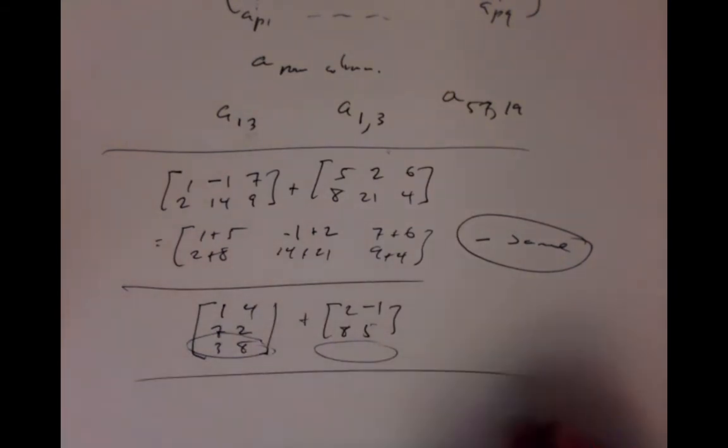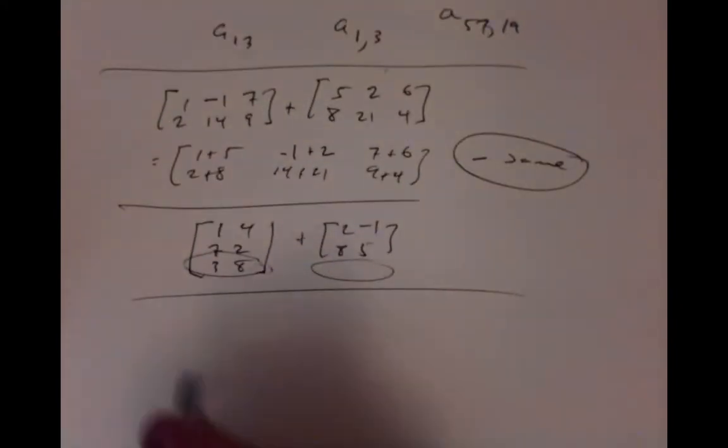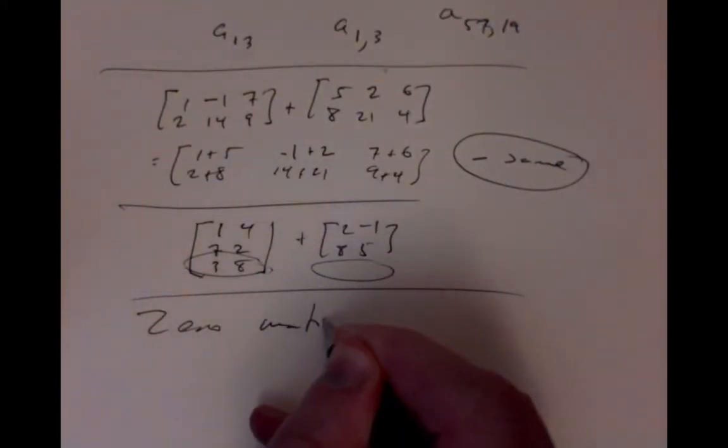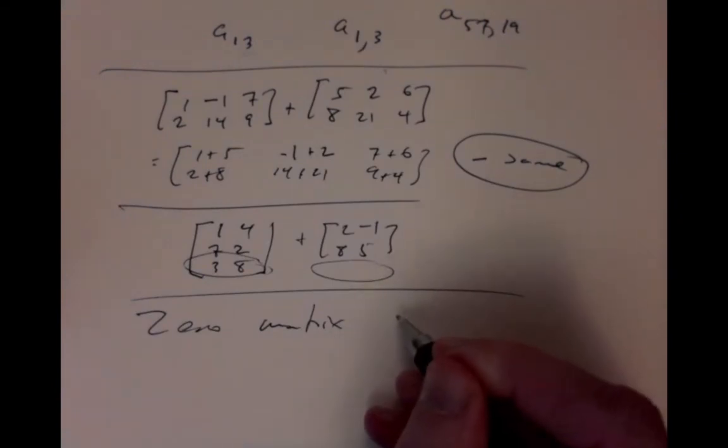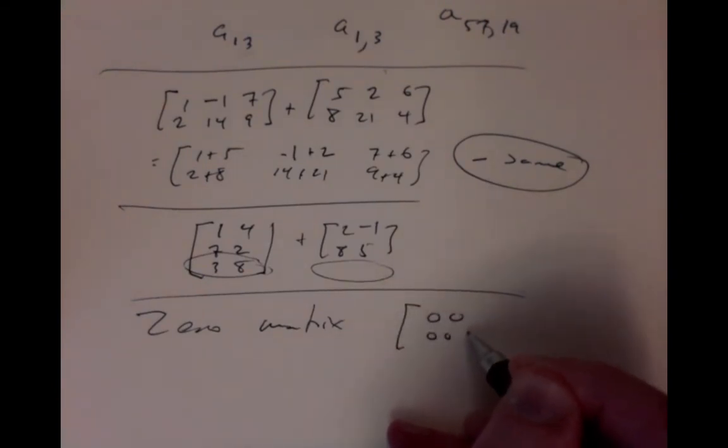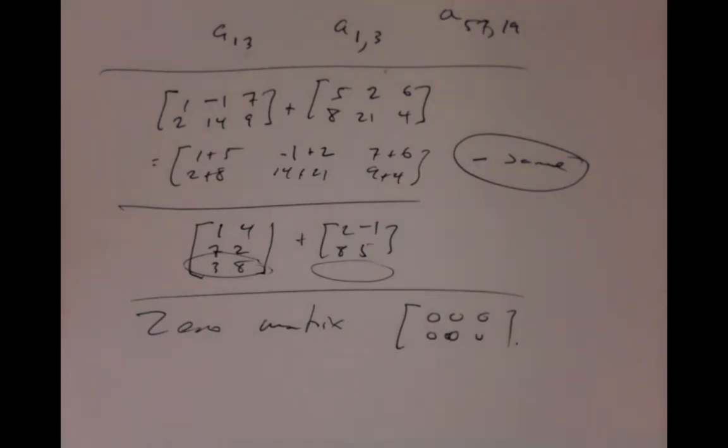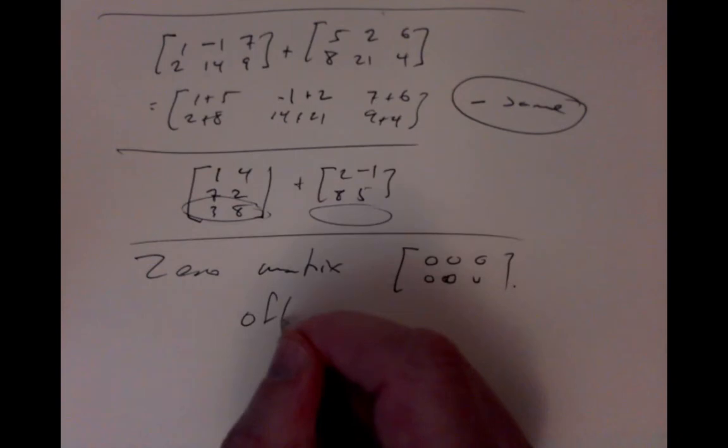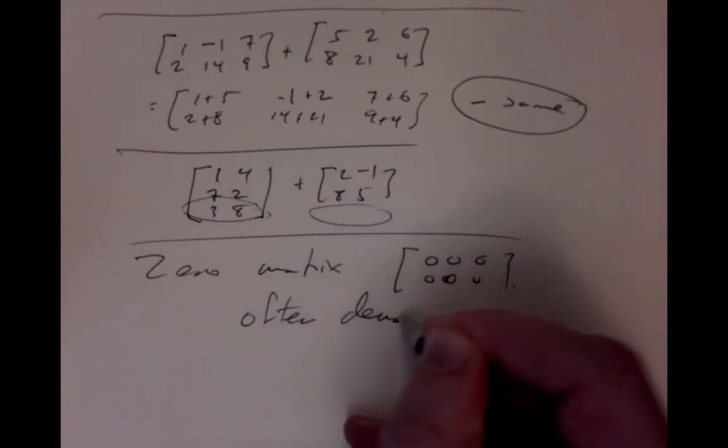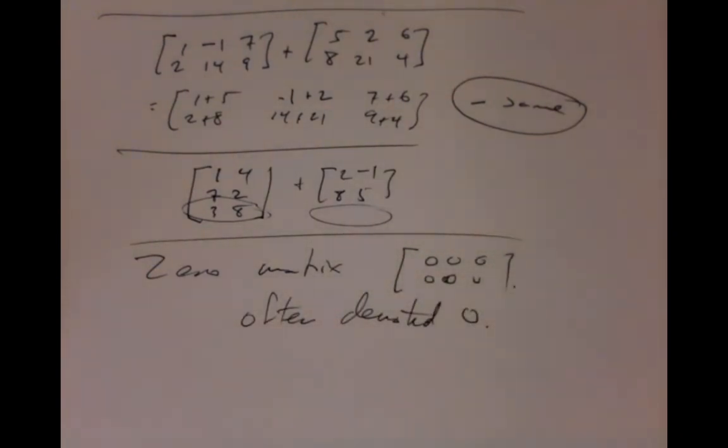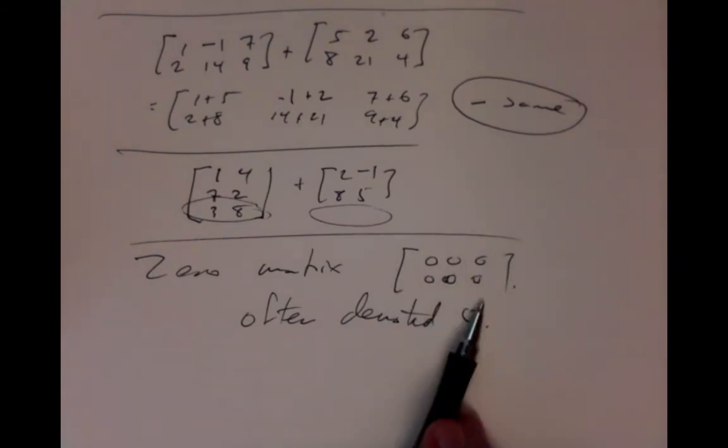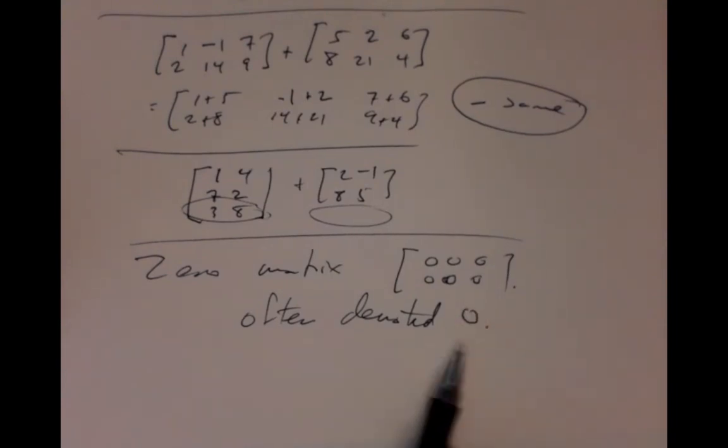The zero matrix is the matrix of whatever size which has only zero entries. [0, 0, 0; 0, 0, 0, 0] is a zero matrix. And it's often just denoted with a symbol 0 when that's reasonably clear. Because usually when we're manipulating matrices, the sizes are fairly clear. So if we just use the symbol 0, it means whatever size of zero matrix we need to work with at the current time.